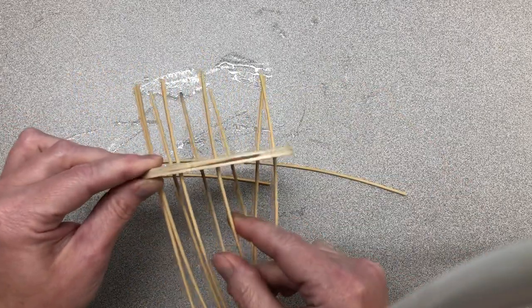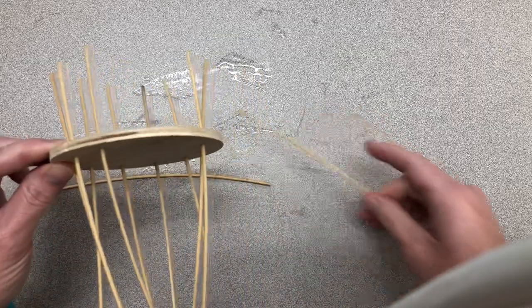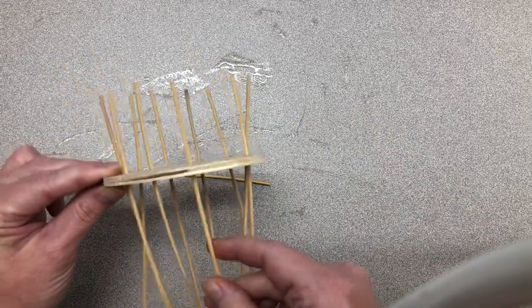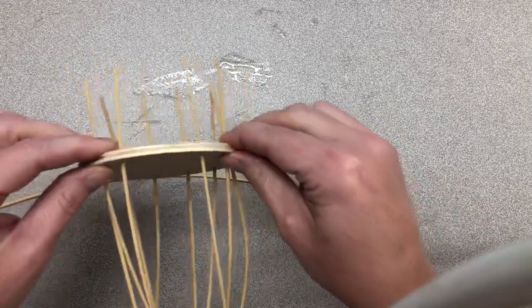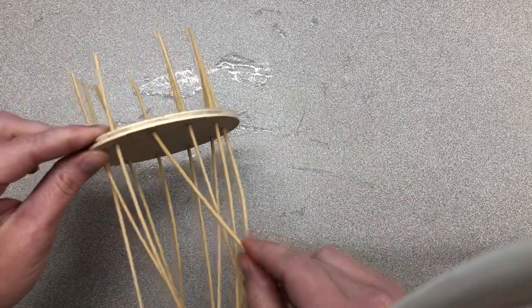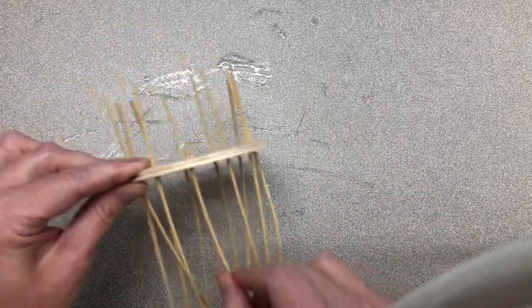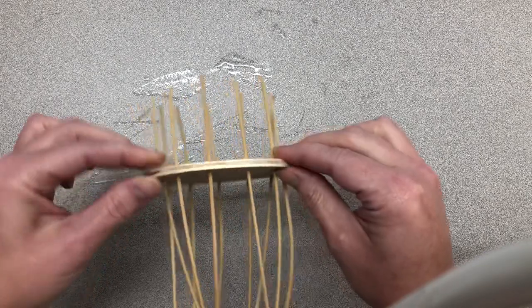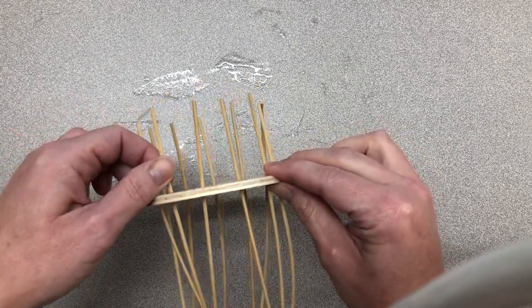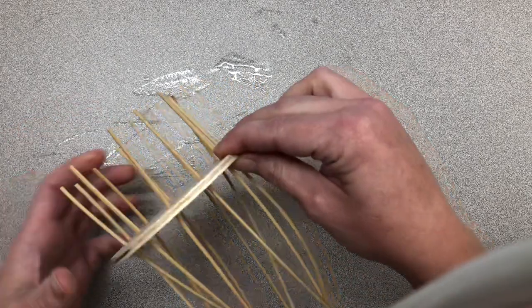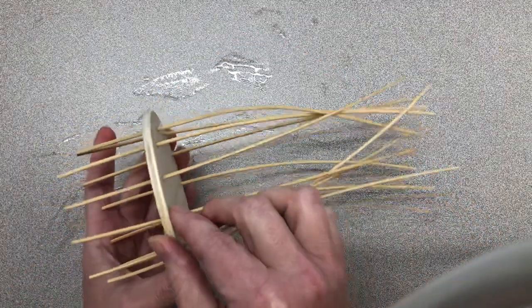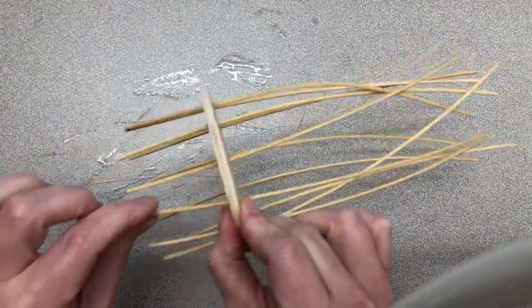And the reason you're working with the materials when they're wet is so that they will actually bend instead of breaking. All right, so I've got my 11 spokes here and now what I'm going to do is take one and I'm going to weave it around and then behind just like that.